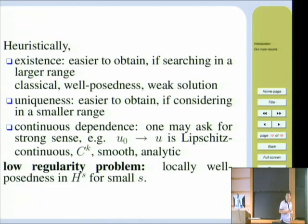The third one, continuous dependence, we could ask for some stronger sense. Like, not only continuous, but also Lipschitz continuous, or C^k smooth, or smooth, or analytic. We can ask the solution flow for that.